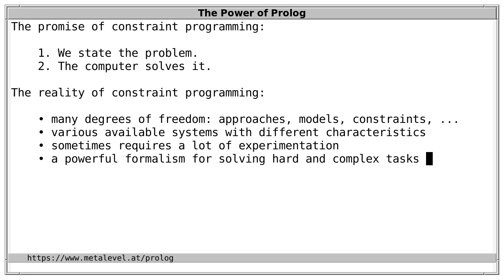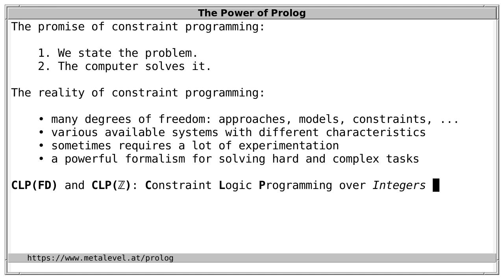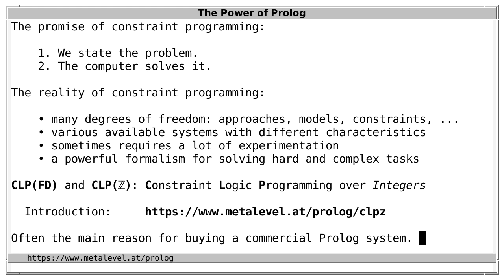Despite these issues, constraint programming is a very powerful formalism routinely used in practice to solve hard and complex tasks. For combinatorial tasks like timetabling, CLP(FD) and CLP(Z) constraints are especially useful — constraint logic programming over finite domains and over integers respectively, where all domains are sets of integers. This is very useful because all finite combinatorial tasks can be mapped to integers and expressed with CLP(Z).